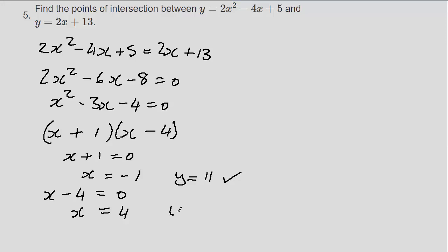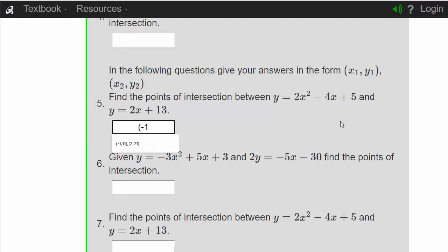For x equals 4 in the first equation: 4 squared is 16, times 2 is 32; 4 times 4 is 16, so 32 minus 16 is 16; 16 plus 5 is 21, giving y equals 21. Sanity check in the second equation: 2 times 4 is 8, and 8 plus 13 is 21. Confirmed. So the two intersection points are (minus 1, 11) and (4, 21). Correct.